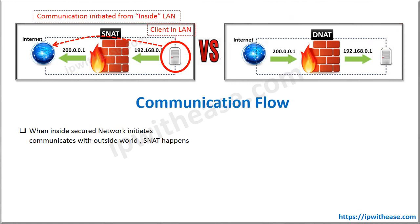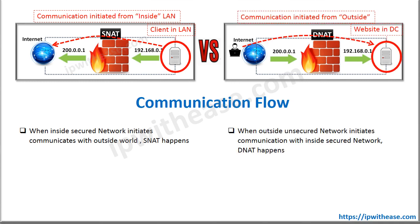Next is the communication flow. When the inside secured network wants to access the outside world — that is, internal users who want to access any server or browse any internet-facing application — they will use SNAT. While in case of DNAT, when an outside unsecured network or host wants to access the internal network or server which is inside the data center, DNAT will happen.